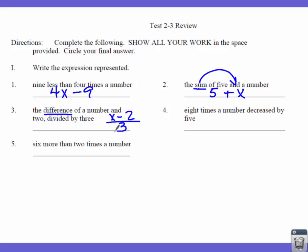Number 4: 8 times the number decreased by 5. 8 times the number means 8X. Then it says that thing — 8 times the number — is decreased by 5, so I subtract 5 from it. Decrease means subtract. Number 5: 6 more than 2 times the number. '6 more than' means I'm going to add 6 to something. What am I adding 6 to? 2 times a number, so 2X.